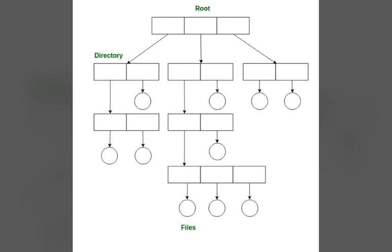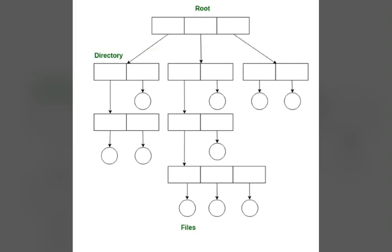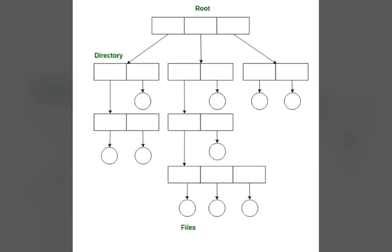Once we have seen that a two level directory is a tree of height 2, the natural generalization is to extend the directory structure to a tree of arbitrary height. This generalization allows the user to create their own subdirectories and to organize their files accordingly.